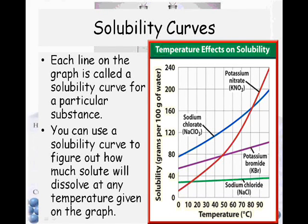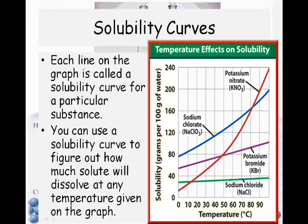You can use this solubility curve to figure out how much solute will dissolve at any temperature given on the graph. For instance: at 30 degrees Celsius, which is the least soluble compound? The answer is sodium chloride. And at 60 degrees Celsius, what is the most soluble? The most soluble at 60 degrees Celsius is sodium chlorate. Make sure you review these, and we'll do some practice in class as well.